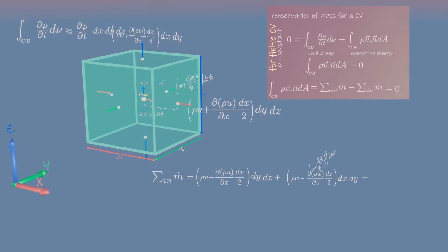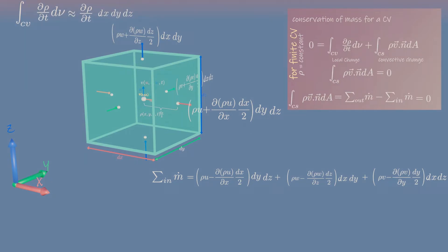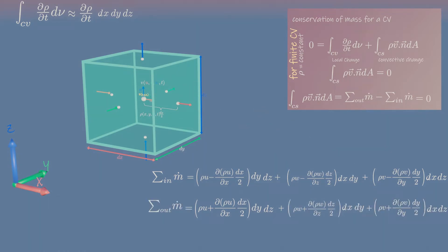The left, bottom and back faces contribute to mass inflow. Similarly, the right, top and front faces contribute to mass outflow.